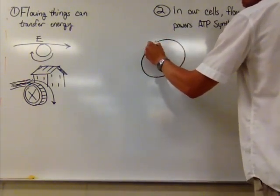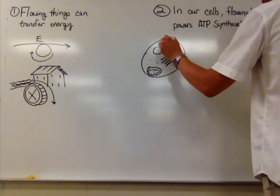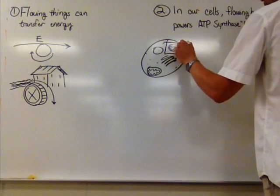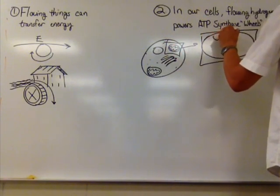In our cells we have organelles. Every cell has a nucleus, ribosomes, and mitochondria - actually multiple mitochondria. The mitochondria are sort of like the mills inside of our cells.